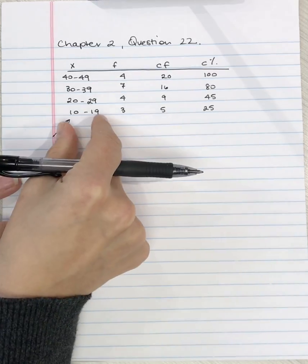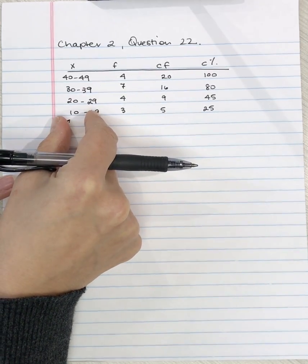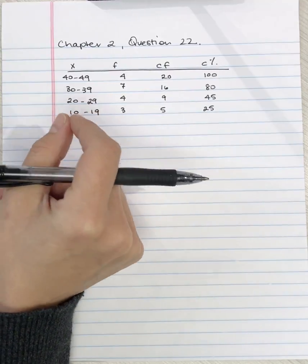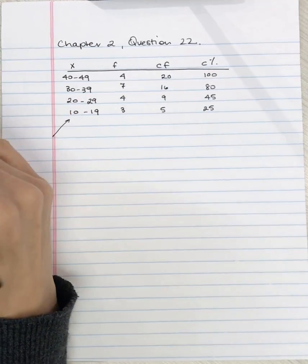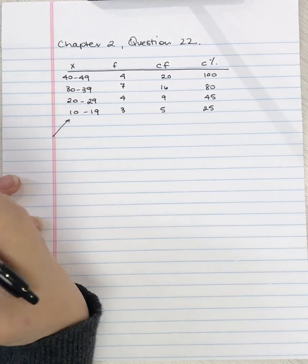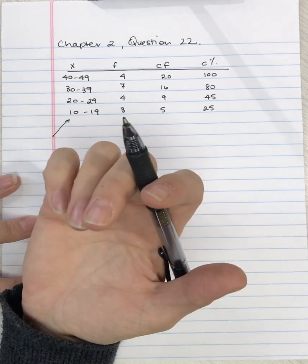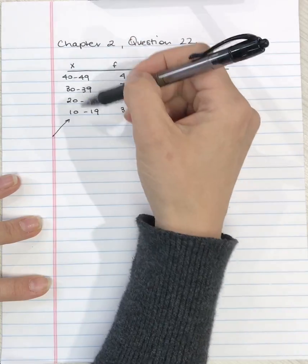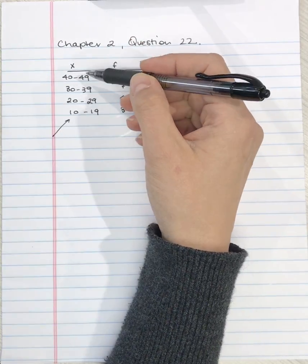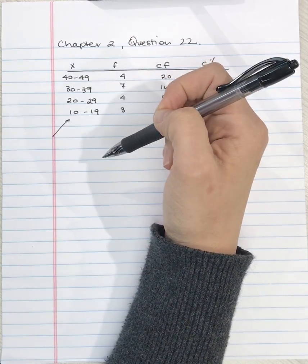So if the width of the X column was smaller, we'd know perhaps whether it was between 9.5 and 14.5 or 14.5 and 19.5 if the width instead of being 10 was 5, for example.